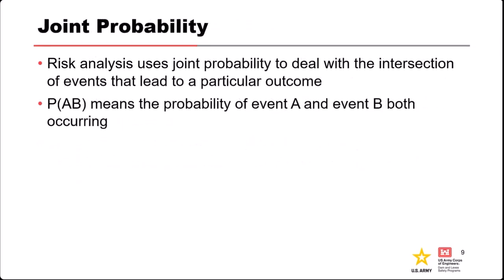Joint probability ties back to intersection, which we talked about yesterday. Joint probability tells us something about the intersection of events — what's the probability of two or more events both occurring. In event trees and risk analysis, when we decompose things into a sequence of events, we have a pathway where a collection of events all have to occur to result in a failure of our dam or levy. The total probability of failure is the joint probability of all the events we've decomposed our failure mode into.